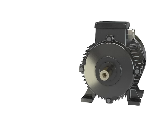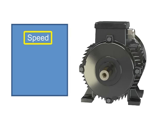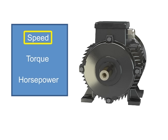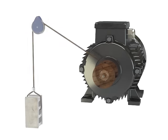The three factors that determine the type of work a motor can produce are speed, torque, and horsepower. Speed is defined as how fast the motor performs its work. For example, a shaft can rotate slowly or quickly. The typical units of measurement for rotational motor speed are revolutions per minute, or RPM.